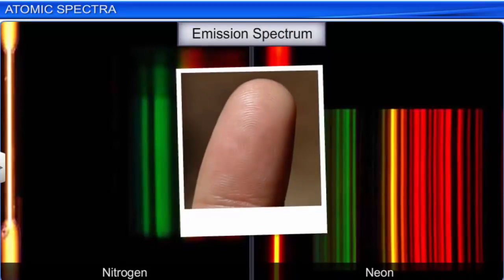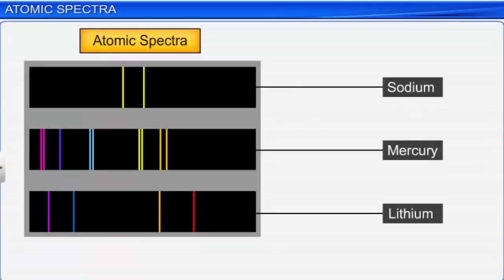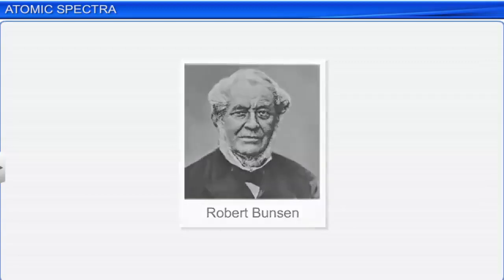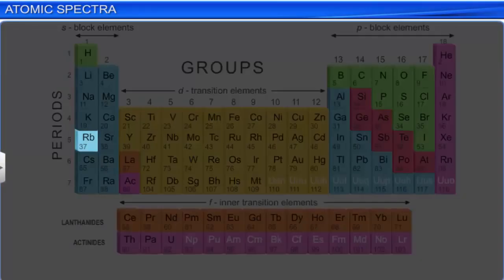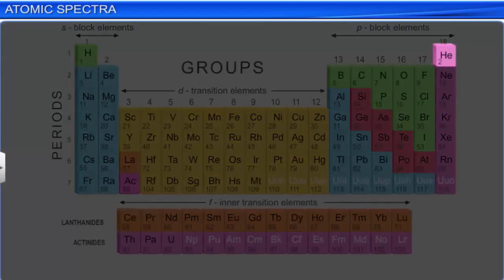The characteristic lines in atomic spectra can be used in chemical analysis to identify unknown atoms. German chemist Robert Bunsen was one of the first investigators to use atomic spectra to identify elements. Elements like rubidium, cesium, thallium, indium, gallium, and scandium were discovered when their minerals were analyzed by the spectroscopic method. The presence of helium was also detected in the sun by means of the spectroscopic method.